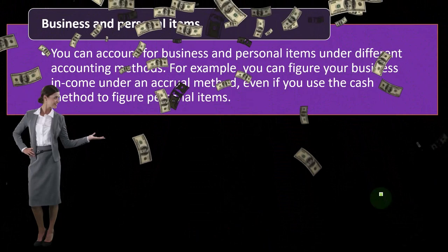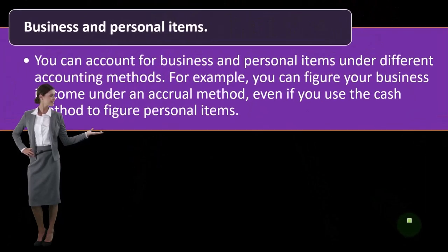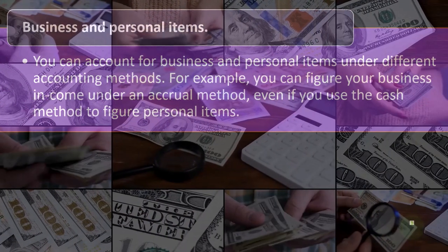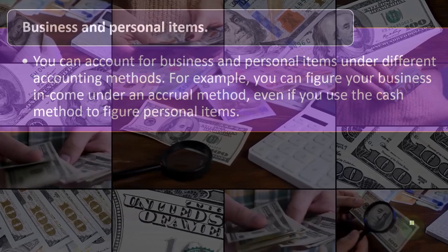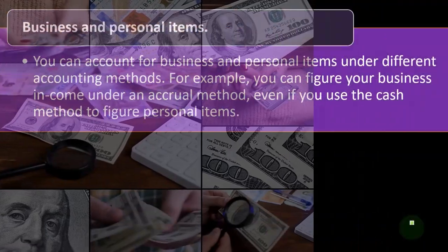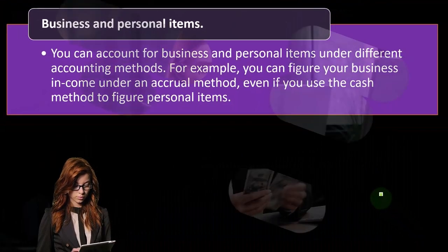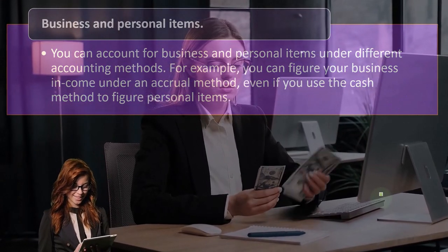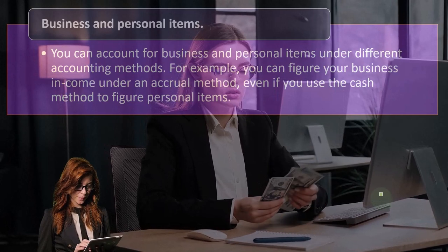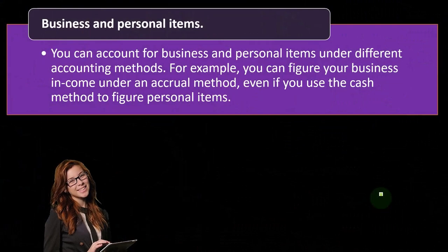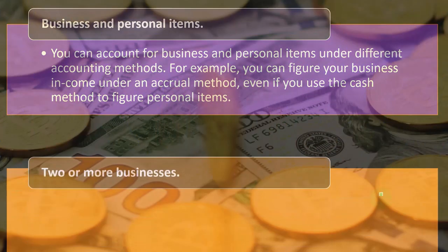You can account for business and personal items under different accounting methods. For example, you can figure your business income under an accrual method even if you use a cash method to figure your personal items. Most deductions on a Form 1040 — on Schedule A and above-the-line deductions — are on a cash-based type of system. That doesn't mean your business income on a Schedule C can't be on an accrual method. Generally, business income is separate from the rest of the tax return, which may still be on a cash-based system.